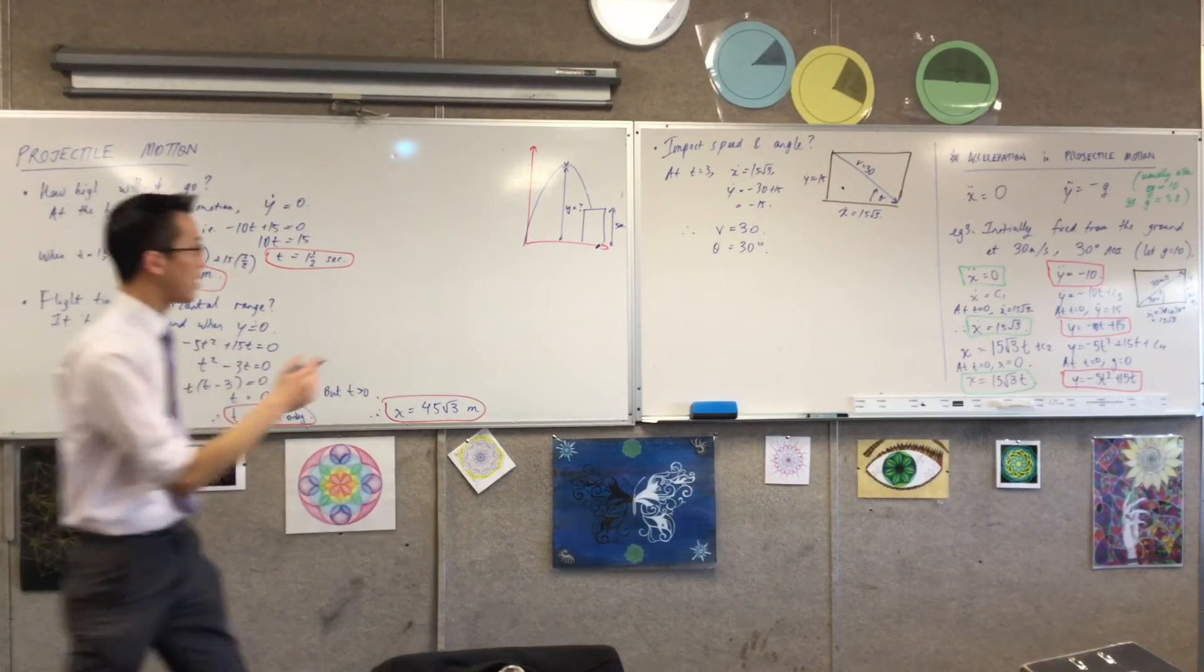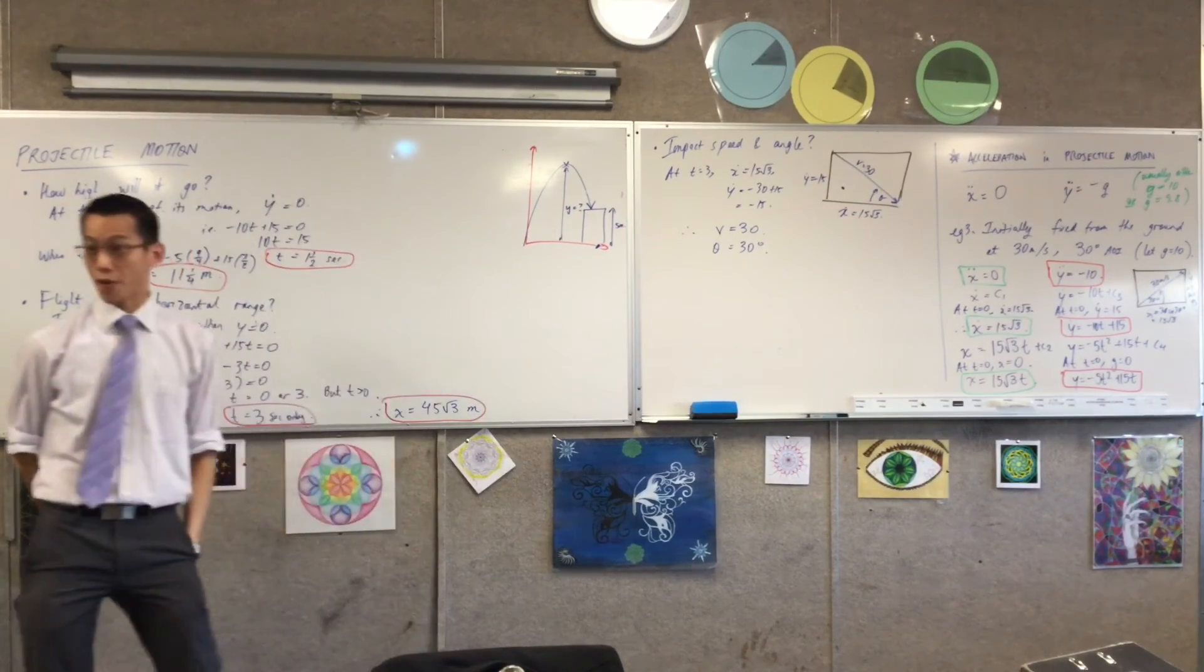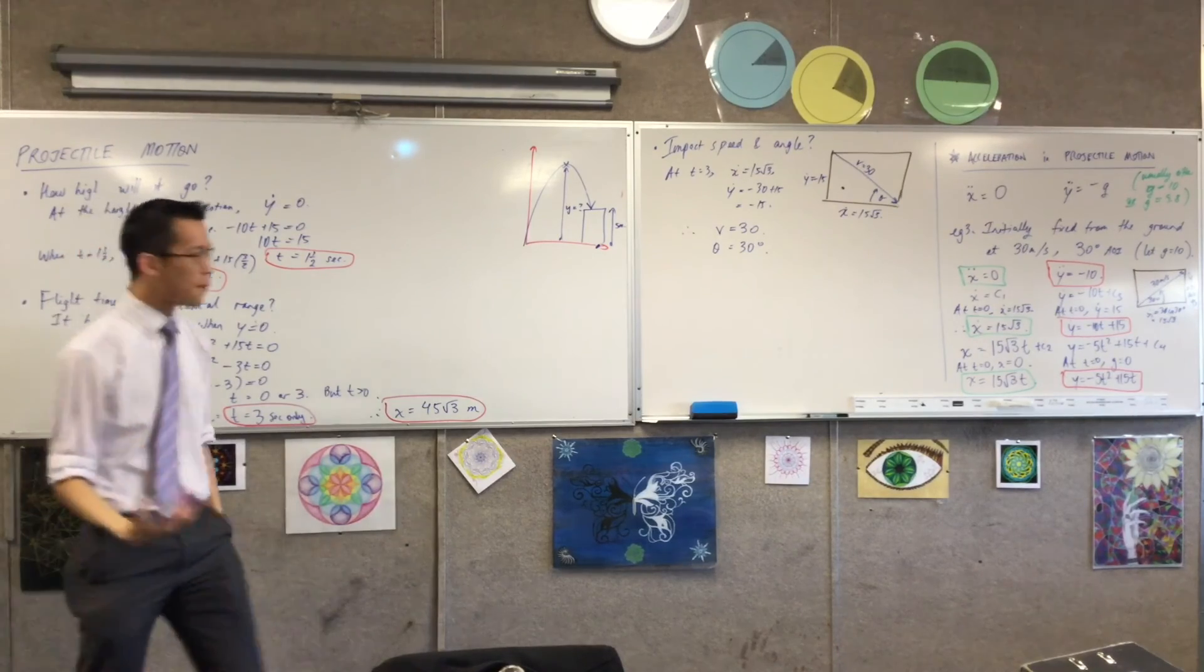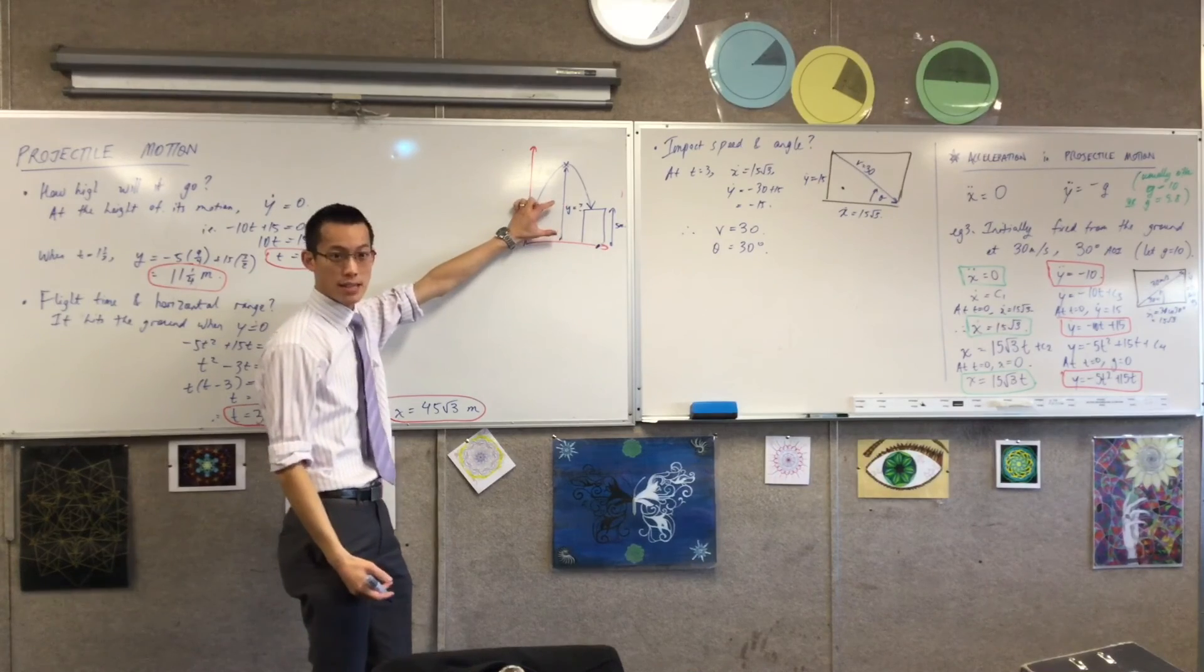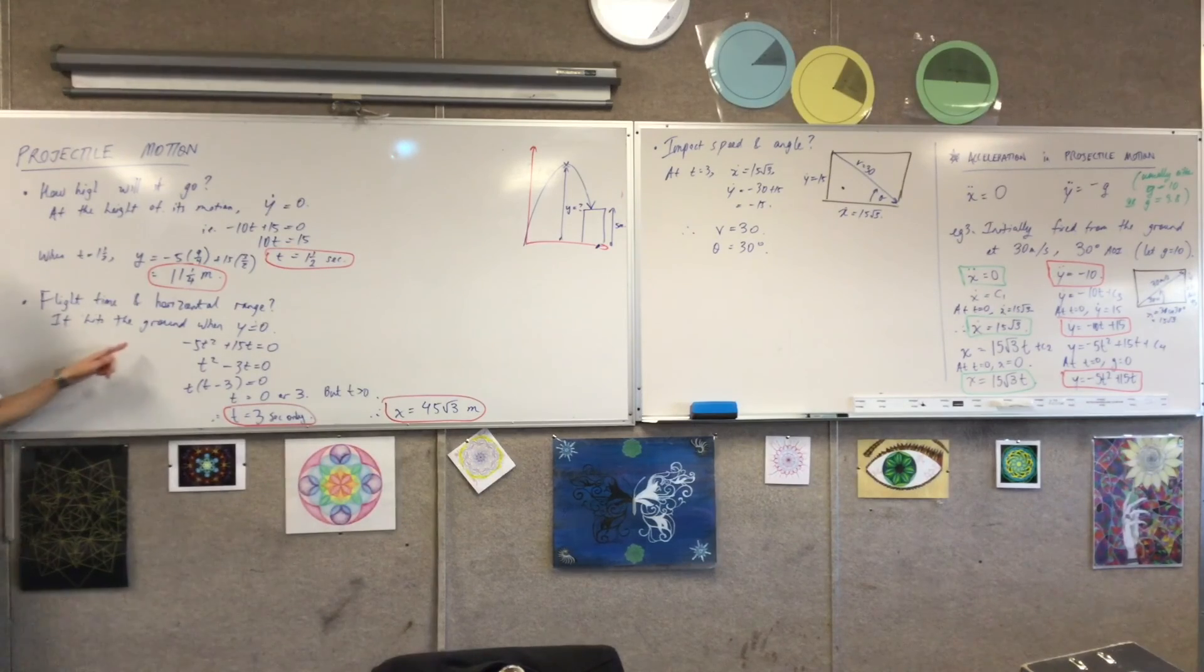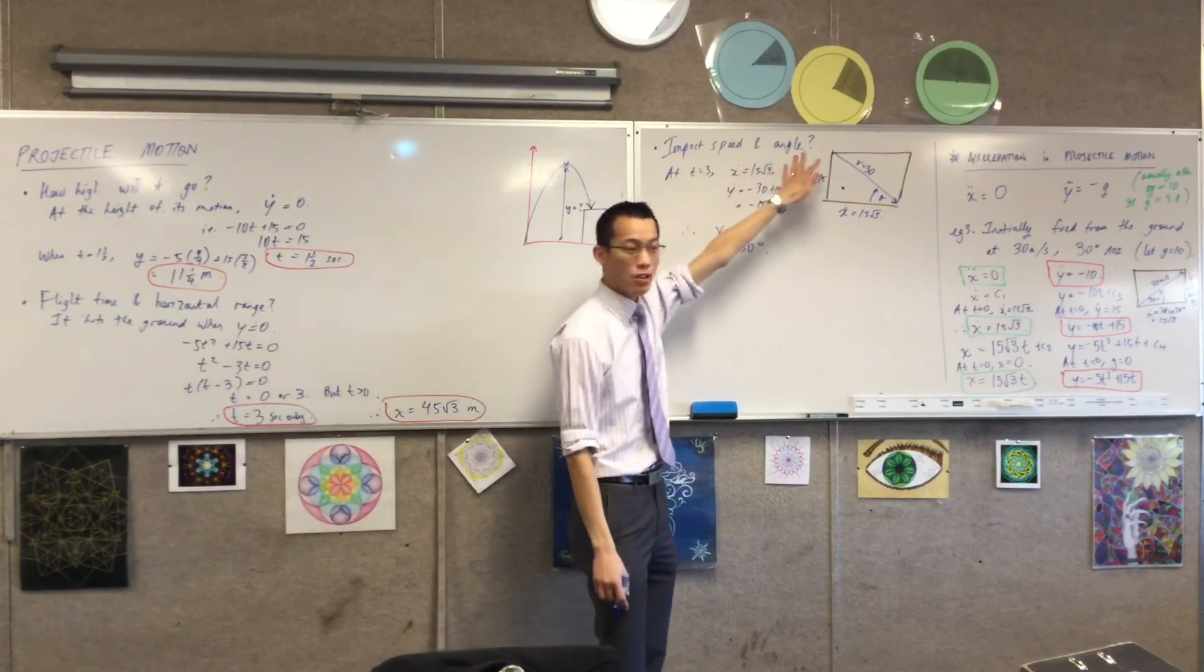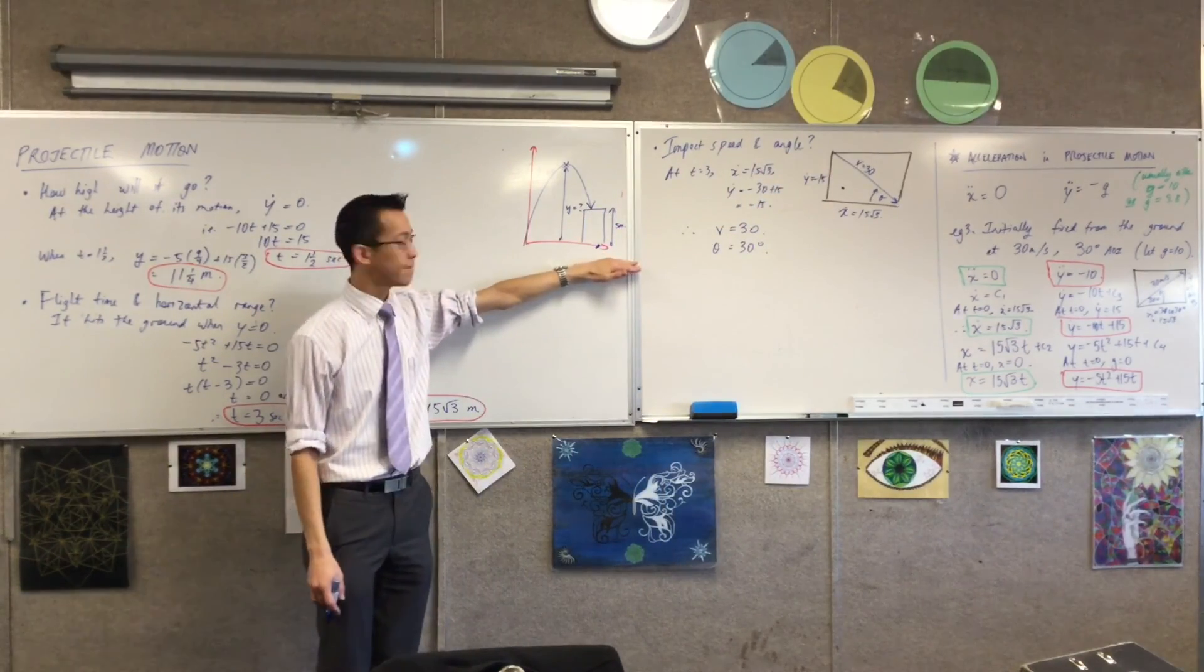What would I do to work out the impact speed and angle that are now different? They're going to be different. Something different is going on. How would you go about finding these two if I changed this thing about the final part of the question? I could ask all of these. I could ask what will be your new flight time and horizontal range if you're going to hit this five meter platform, and what will be your impact speed and angle now that you're hitting this raised thing rather than coming back down to the ground.